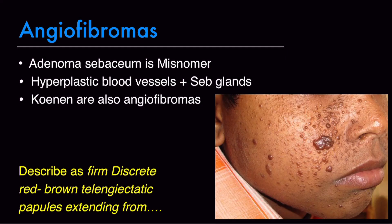The straight giveaway of tuberous sclerosis diagnosis is adenoma sebaceum, but keep in mind it is a misnomer — this is not an adenoma arising from sebaceous glands. Angiofibroma is a more appropriate name because there are hyperplastic blood vessels, collagen, and sebaceous glands in these lesions. Koenen tumors are also angiofibromas and are basically periungual fibromas. When you see cutaneous angiofibromas in an exam, describe them as discrete, firm, red, round, telangiectatic papules present on the butterfly area of the face.